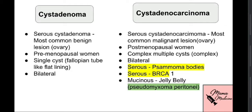The serous and mucinous subtypes can both present as a cyst adenoma — the benign form — or cyst adenocarcinoma — the malignant form. As the names indicate, they will be cystic: filled with serous/watery fluid in serous cyst adenoma, or with mucus in mucinous cyst adenoma. Importantly, serous cyst adenoma is the most common benign lesion of the ovary.